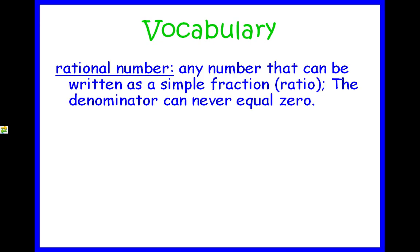The vocabulary that you need to know: A rational number is any number that can be written as a fraction, a simple fraction, or you can call it a ratio. The denominator here, though, can never equal zero.